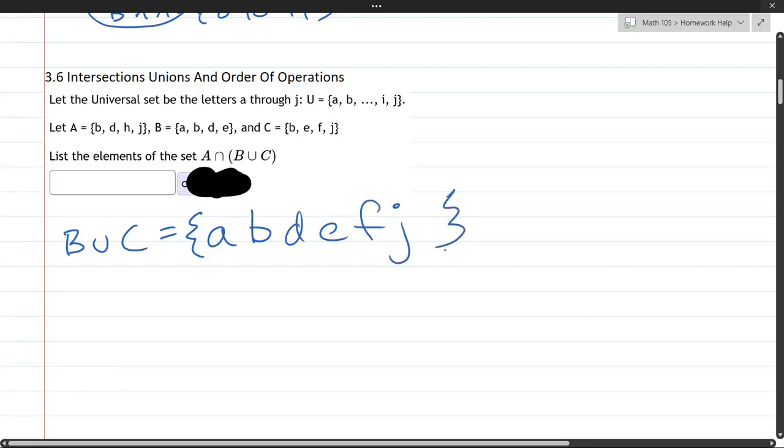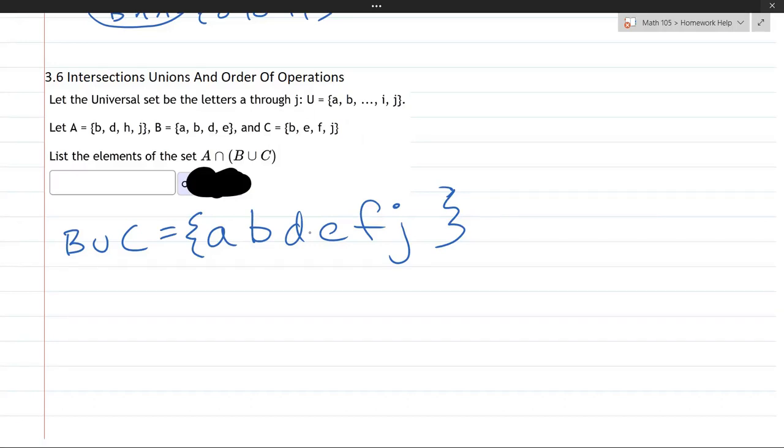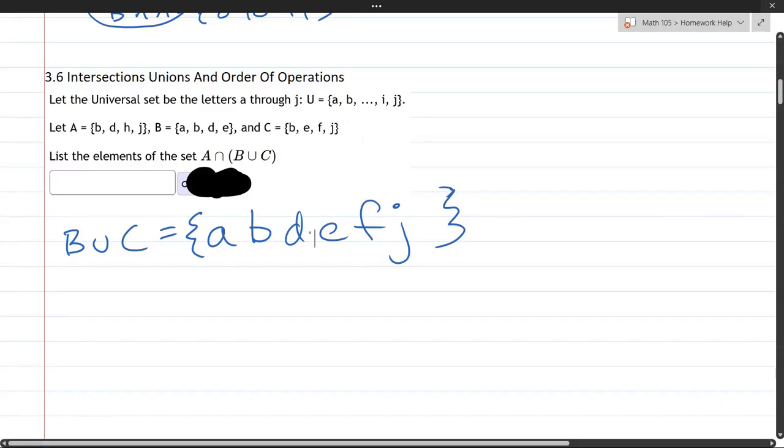So I'm going to go back and double check, make sure I didn't miss anything. So I have B, E, F, J from one set and A, B, D, E from the other. I got all those. If you write them alphabetically ordered, it might make it a little bit more simple. So I recommend doing that if you can.